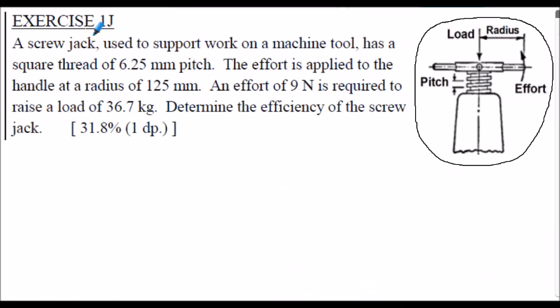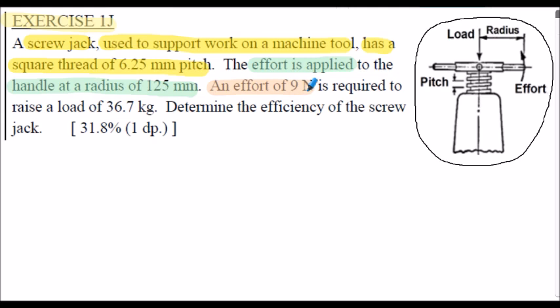Here's exercise 1J for you to attempt. A screw jack used to support work on a machine tool has a square thread of 6.25 millimetre pitch. Effort is applied to the handle at a radius of 125 millimetres. It is found that an effort of 9 newtons is required to raise a load of 36.7 kilograms. Determine the efficiency of the screw jack to one decimal place. I would encourage you to stop the presentation and attempt exercise 1J, but the full work solution is shown on the following slides.